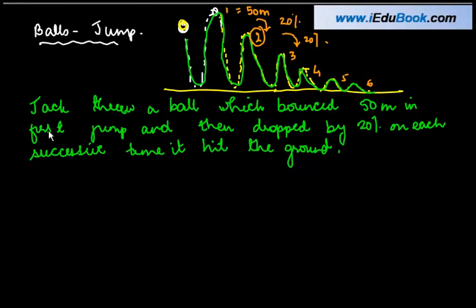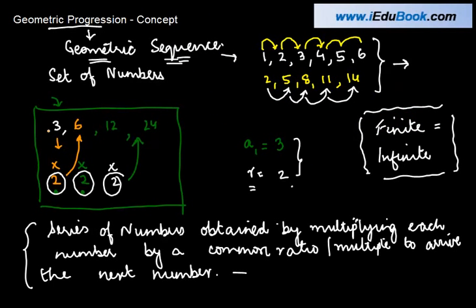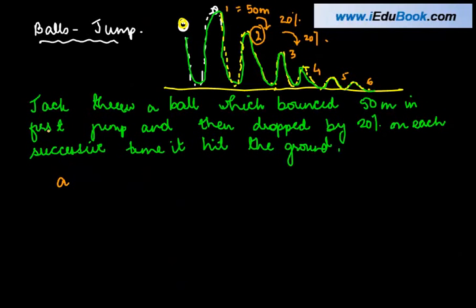So what I told you in the previous example was that the first starting point is referred to as A for the first term. So in our example, A is equal to 50 meters. The ball had actually hit the ground and bounced 50 meters in the first case. Let's call this as case 1 or the number of jump. And this is the height.